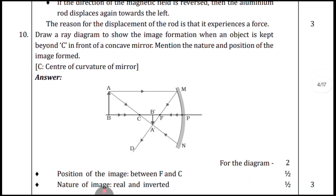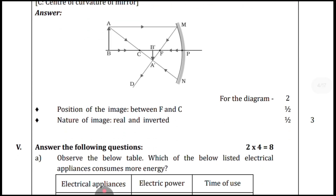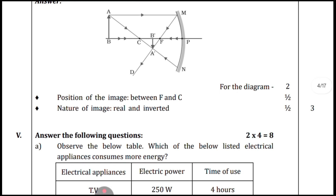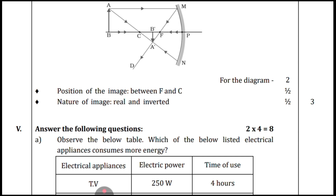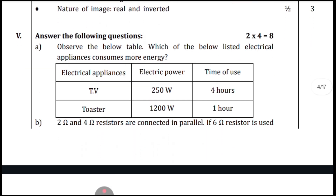Question ten: draw a ray diagram. Diagrams are very important in your board examination as well as preparatory examination — do practice all ray diagrams with their position and nature of image. Here the position of image is between F and C. After drawing the diagram, determine the image position from the rays. Arrow marks and notations are very important. This diagram will fetch you three marks if you draw the position of image, arrow marks, and all symbols correctly.